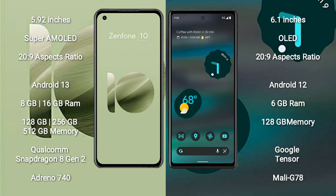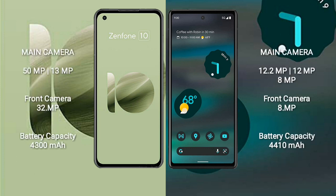Asus Zenfone 10 features a Qualcomm Snapdragon 8 Gen 2 processor with Adreno 740 GPU. Google Pixel 6a comes with 6GB RAM and 128GB internal storage, powered by the Google Tensor processor with Mali-G78 GPU. Asus Zenfone 10 has a rear dual-camera setup of 50MP plus 13MP, and a 32MP front camera.